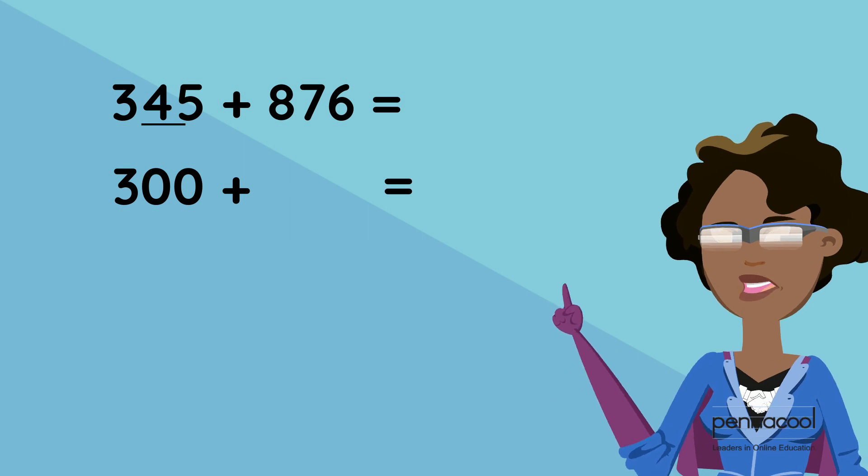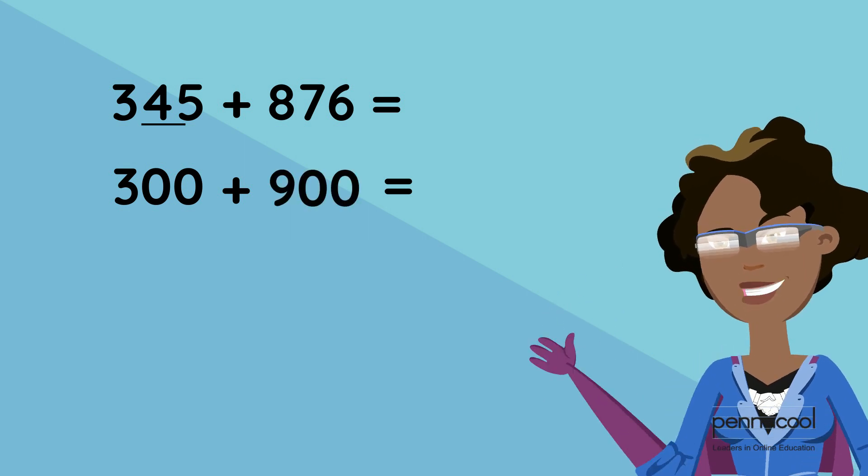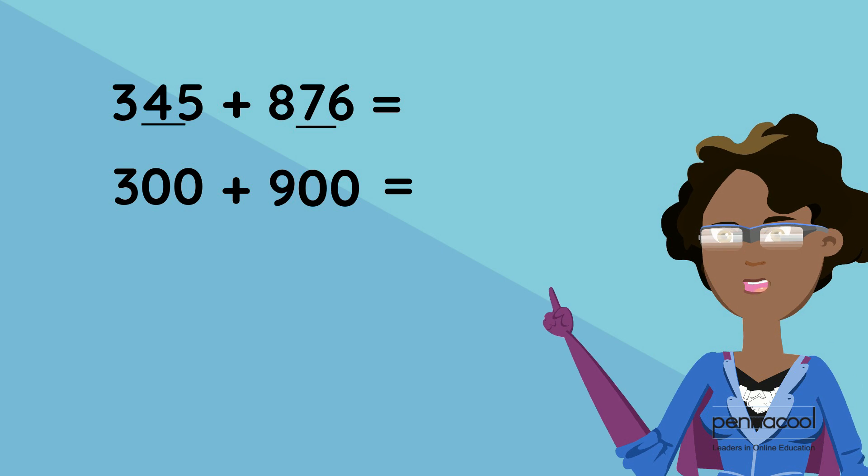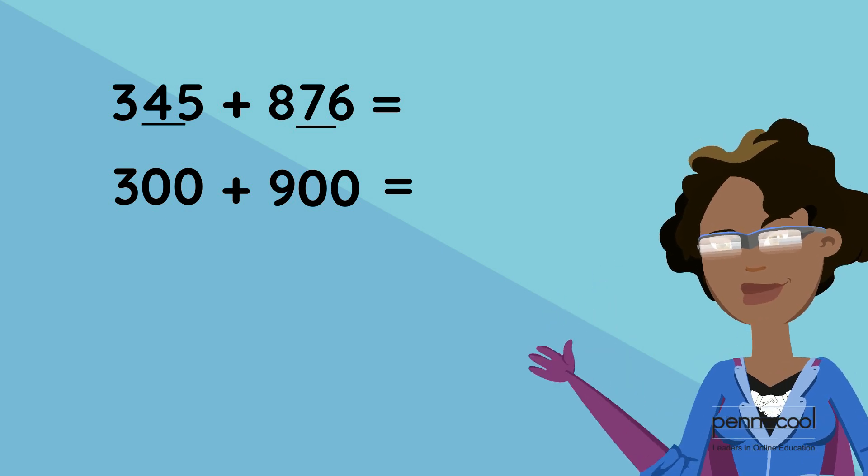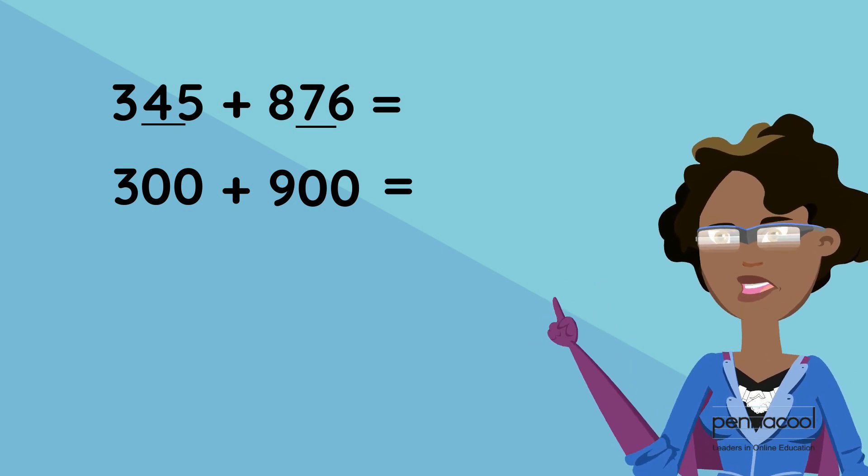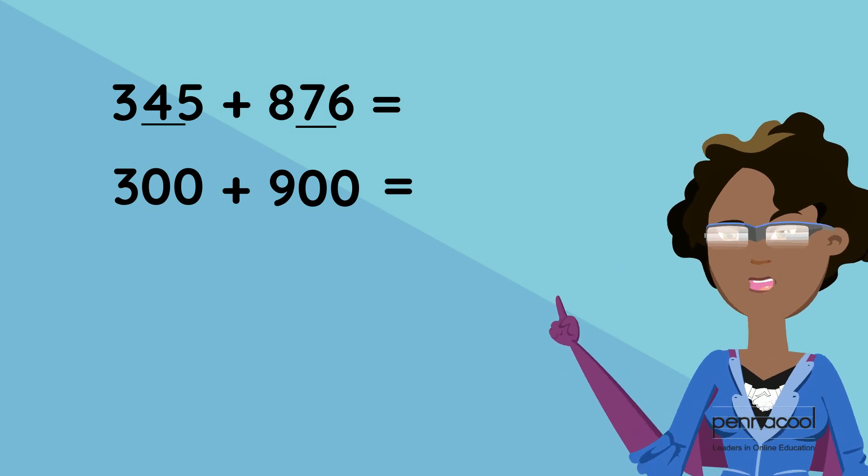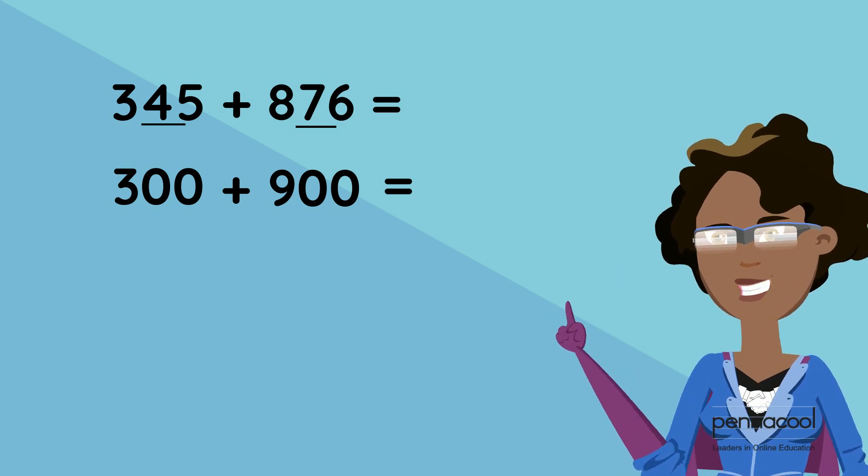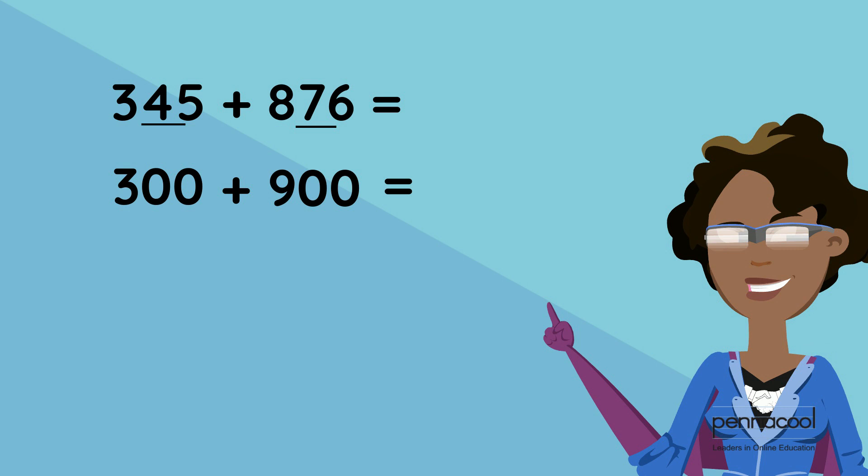The next number is 876. Rounding that to the nearest hundred would be 900. When we round we look at the number in the tens column. Since it's more than five in this case we add one to the number in the hundreds column and change the numbers in the tens and ones to zeros.